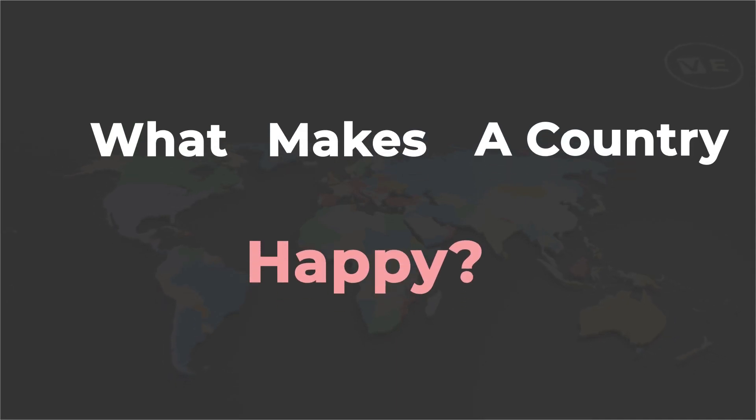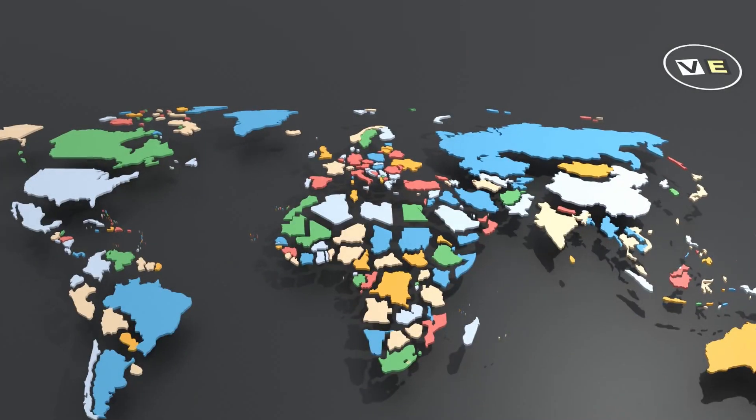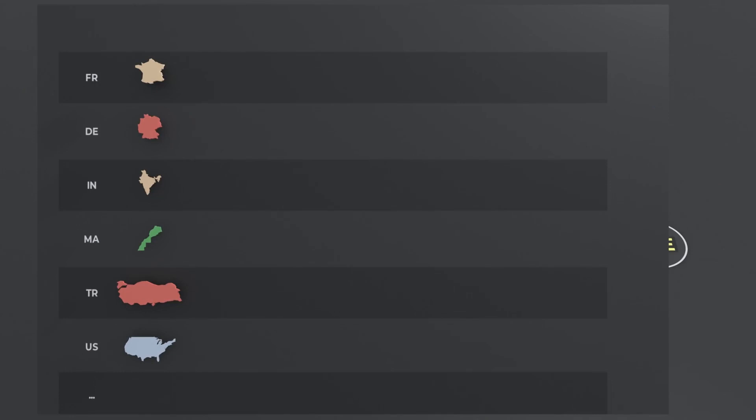What makes a country happy? In 2021, the UN published a report that gives a score to each country on Earth according to the following six factors.